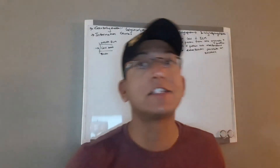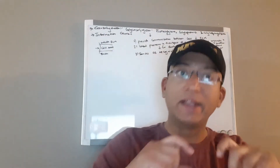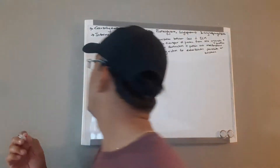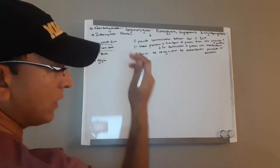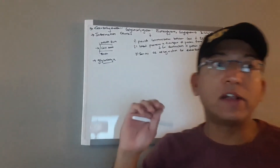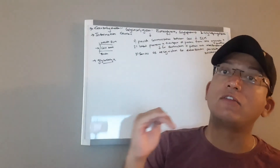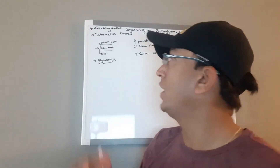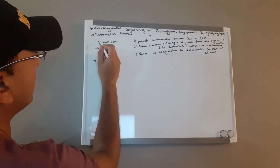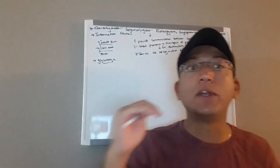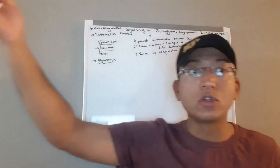In almost every eukaryotic cell, specific oligosaccharide chains attached to the components of the plasma membrane form a carbohydrate layer called the glycocalyx. When we studied the cell membrane, we studied the glycocalyx — it protrudes to the outside of the cell. It is several nanometers thick and serves as an information-rich surface that the cell shows to its surroundings.